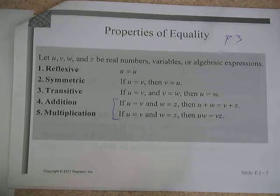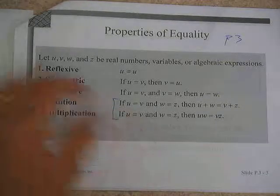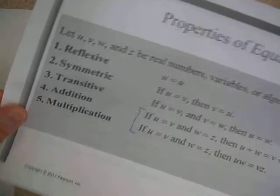Similarly, we know from our previous equation solving that sometimes we have to divide or multiply to get our variable by itself. And what allows us to do that is the multiplication property of equality.